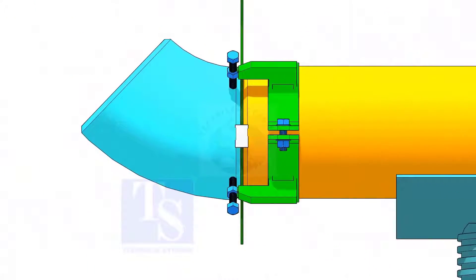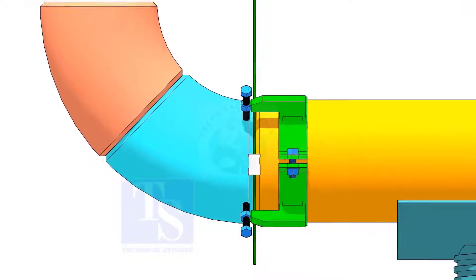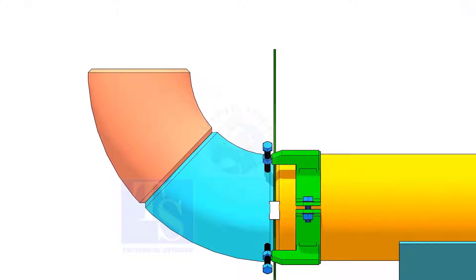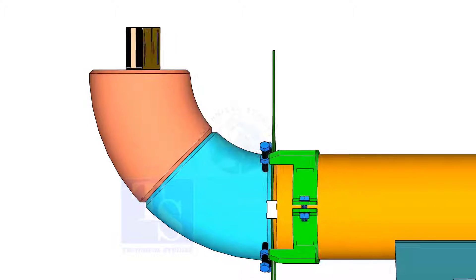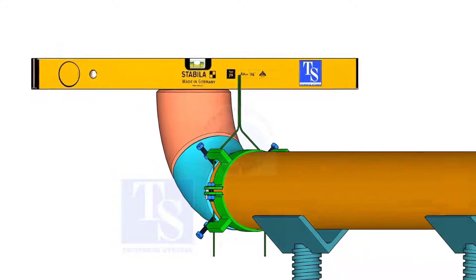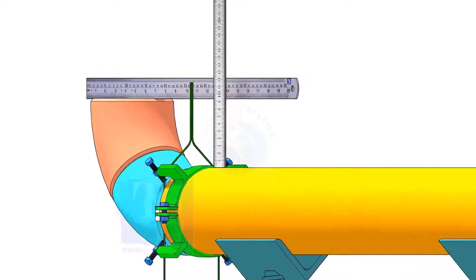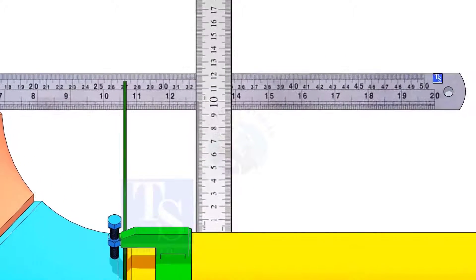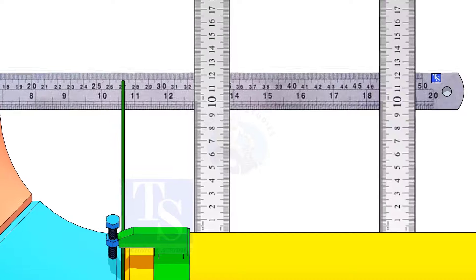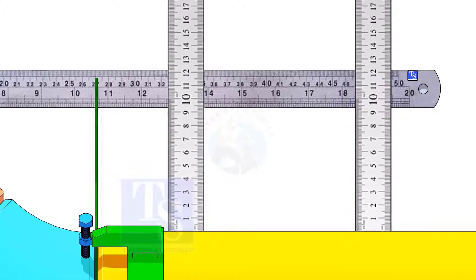Hold another elbow of 45 degree on the top of this elbow. Level this elbow horizontally. Measure the distance, as shown. If correct, tack weld on the top and bottom side of the joint.